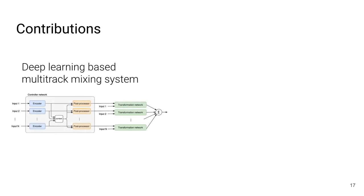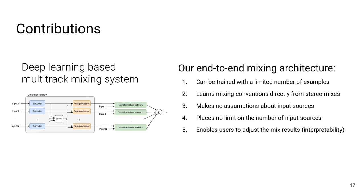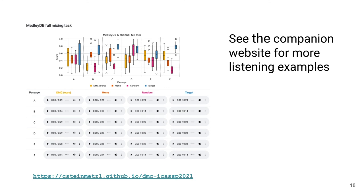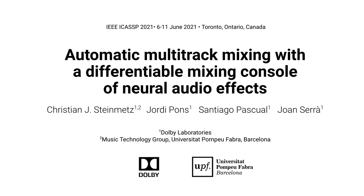In summary, our major contribution is the design of this deep learning-based multitrack mixing system and this end-to-end mixing architecture. It has a number of nice properties: we can train with a limited number of examples, it learns mixing conventions directly from the stereo mixes without any parameters, it makes no assumptions about the input sources or how many sources there will be, and it enables users to adjust the mixing results, providing interpretability. I encourage you to check out the companion website, which has all of the listening examples from our tests as well as more details and the paper itself. Thank you for listening, and if you have any questions please feel free to reach out to us.